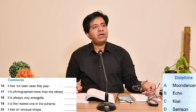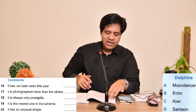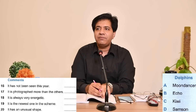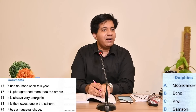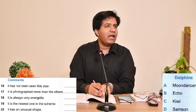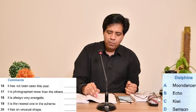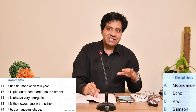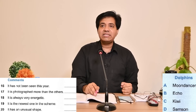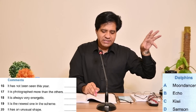Question number 16: a dolphin that has not been seen this year. It's one of these dolphins. They will talk about a dolphin and say this year we haven't found her anywhere but we are looking forward to seeing her. The names are: A is Moon Dancer, B is Echo, C is Kiwi, and D is Samson. Now play the audio and see which dolphin has not been seen this year.